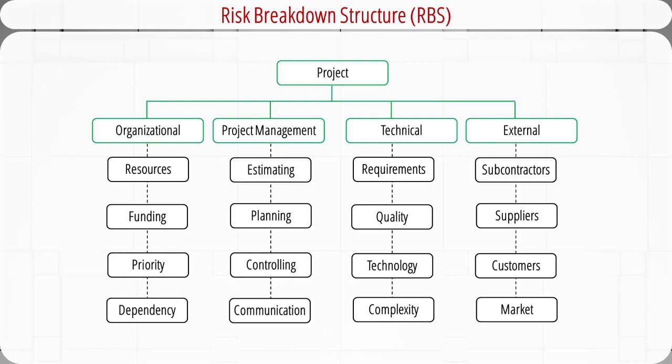In this project, risks are grouped into four different categories: organizational, project management, technical, and external. Organizational risks may come from resources, funding, priority, etc. For example, the organization may not have the required resources or funding for the project. Project management risks may come from planning, estimating, controlling, and communication. For example, poor time and cost estimates and inadequate team communication may lead to project failure.